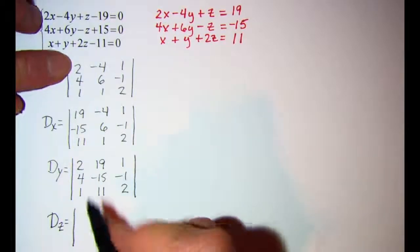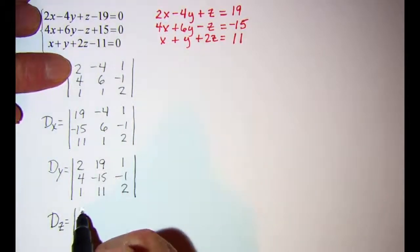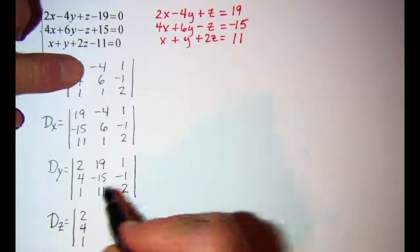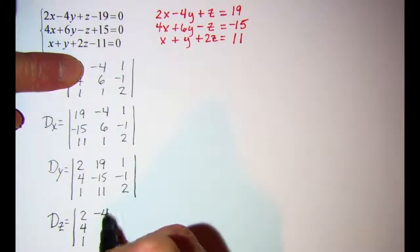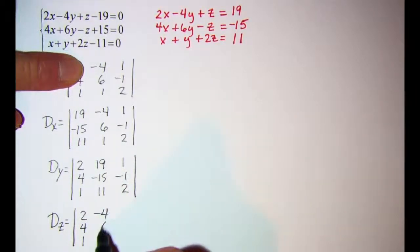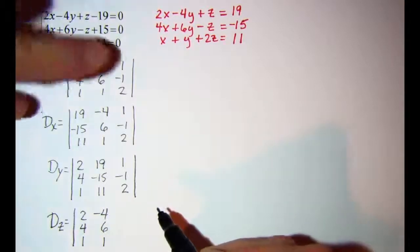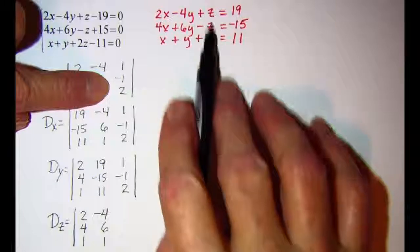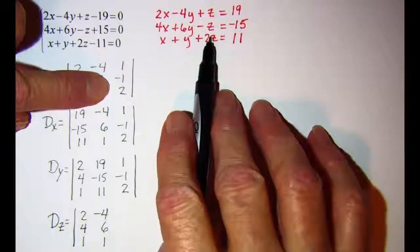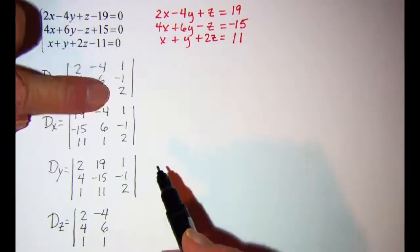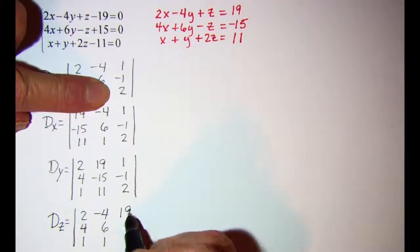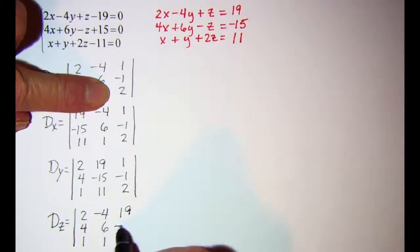For determinant sub z, I'm going to copy column 1 and column 2 from determinant D, and then replace the third column — the z column — with my constants: 19, negative 15, and 11.